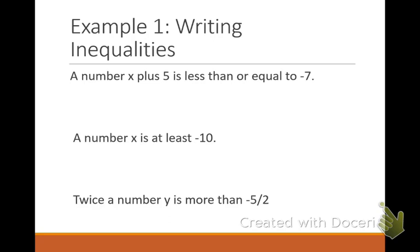Now let's try to get these inequality sentences into actual expressions. The inequality symbol replaces the equal sign — there is no equal sign in these problems; the inequality sign takes its place. A number x plus five is less than or equal to negative seven. So I would write: x plus five, and since it says less than or equal to, that symbol faces x, giving x + 5 ≤ −7.